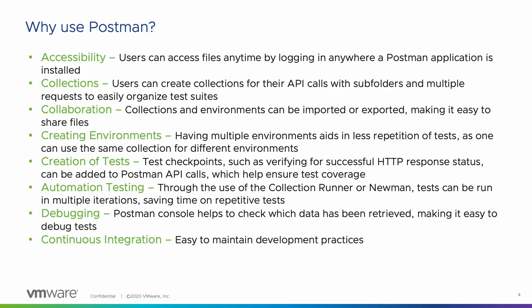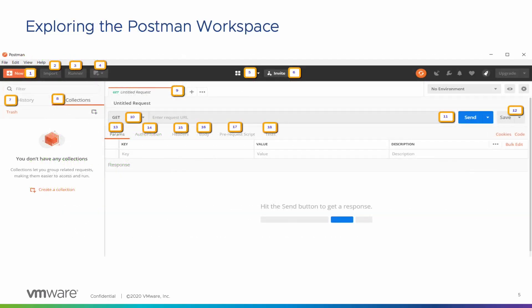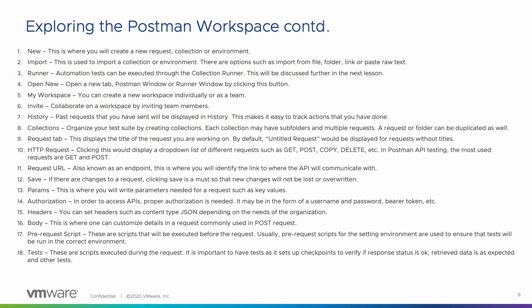Continuous integration: the Postman console makes it easy to maintain development practices. Now that we've learned the benefits of using Postman, let's take a deeper look into the console and learn how to use it. I have outlined 18 features in Postman and provided a key on the next slide. You will likely only need to use a few of these at first, but you can refer to these slides if you want to explore the full functionality of Postman. For now, let's move on to setting up our Postman workspace to make Carbon Black Cloud API calls.